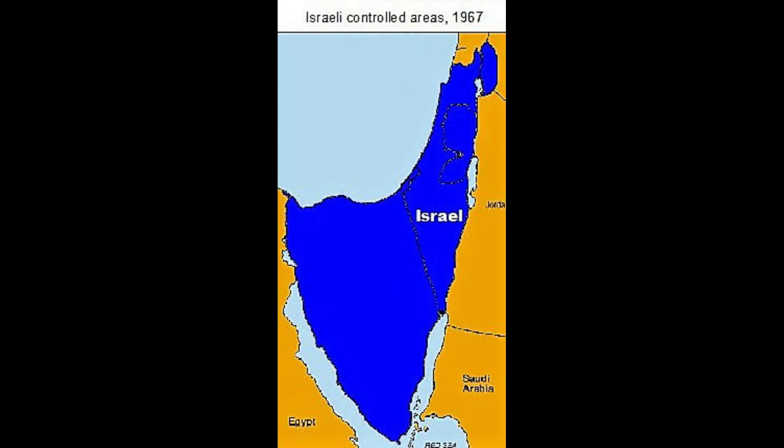After the war, Israel took over the Sinai Peninsula, the West Bank, the Gaza Strip, and the Golan Heights.